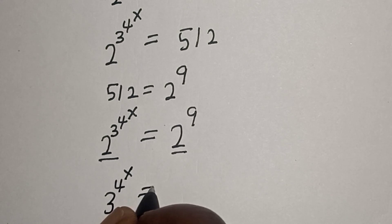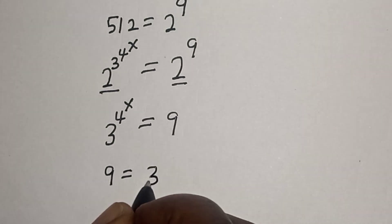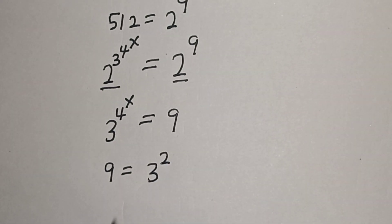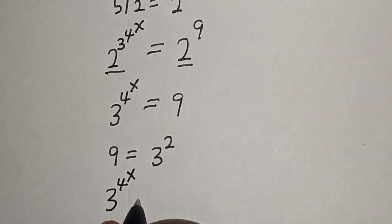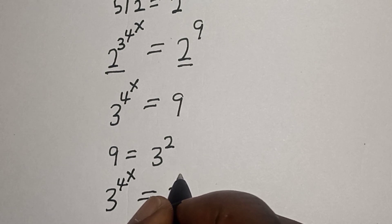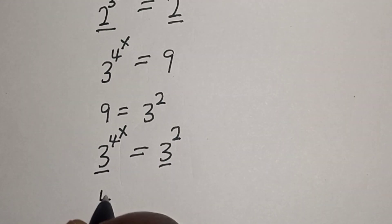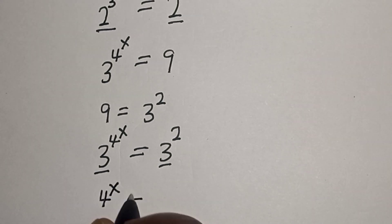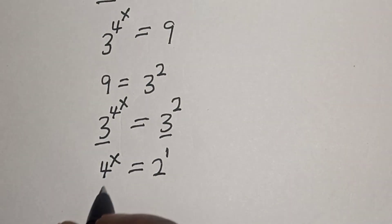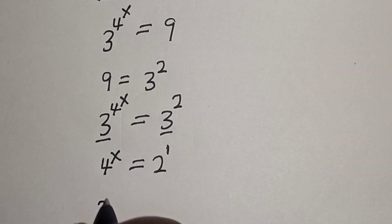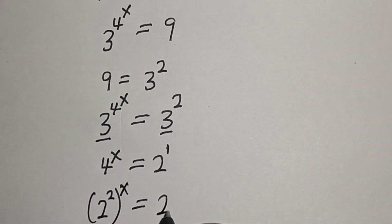We are left with 3 raised to the power of 4 raised to the power of x equals 9. Also, 9 equals 3 squared. Substituting, we have 3 raised to the power of 4 raised to the power of x equals 3 squared. With the same base 3, we get 4 raised to the power of x equals 2. This is also 2 raised to power 1, and 4 raised to the power of x can be written as 2 squared to the power of x, equal to 2 raised to power 1.